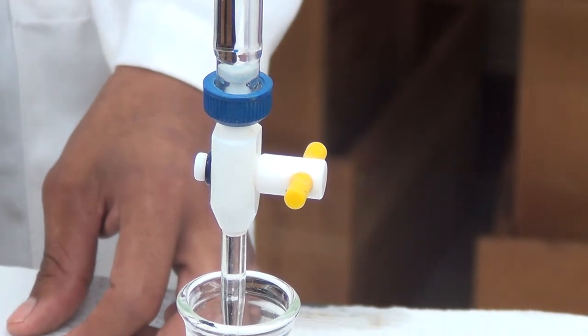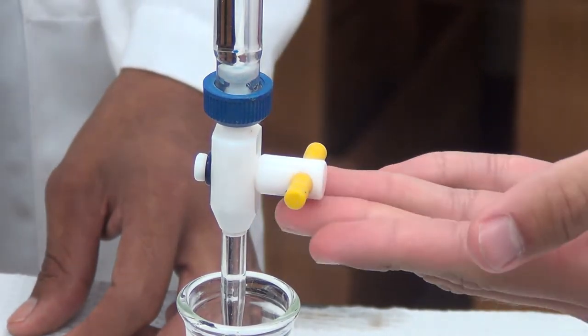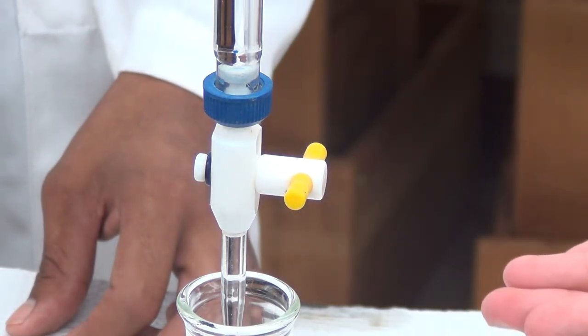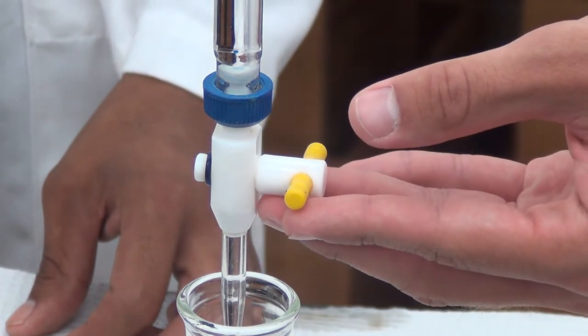The stopcock is a valve that allows control over the rate at which the liquid is dispensed. With the handle perpendicular to the body, it is closed. Parallel, it is completely open.